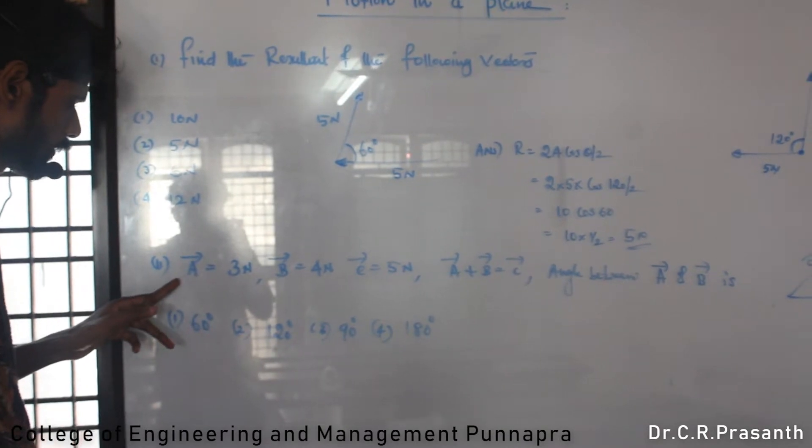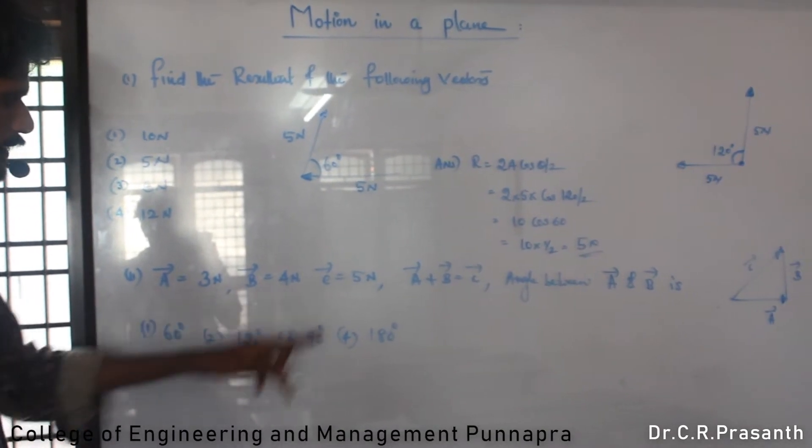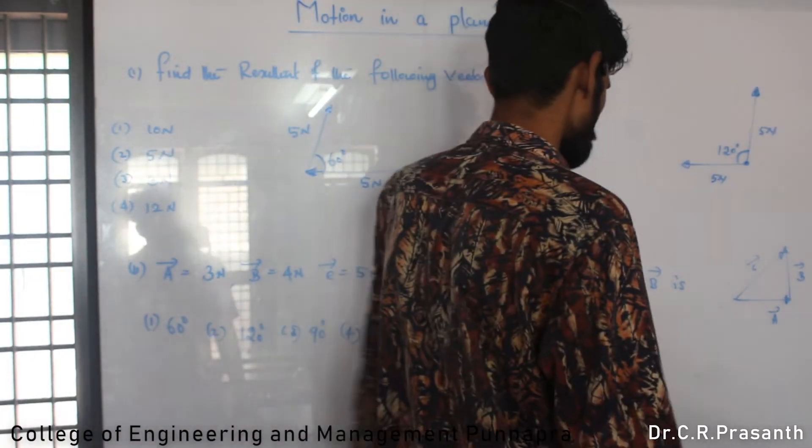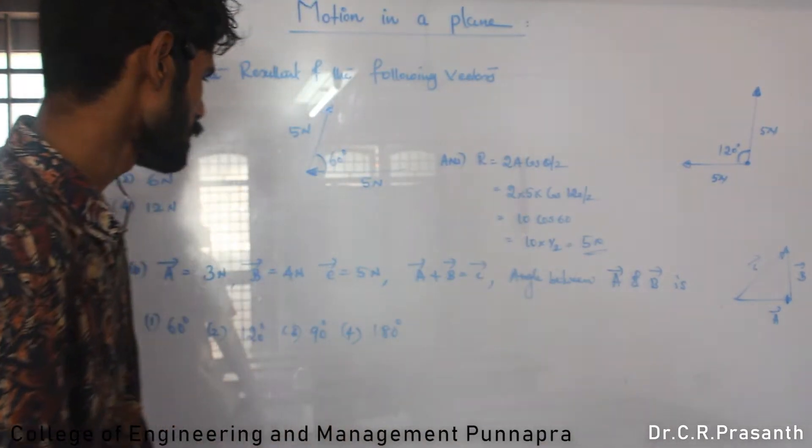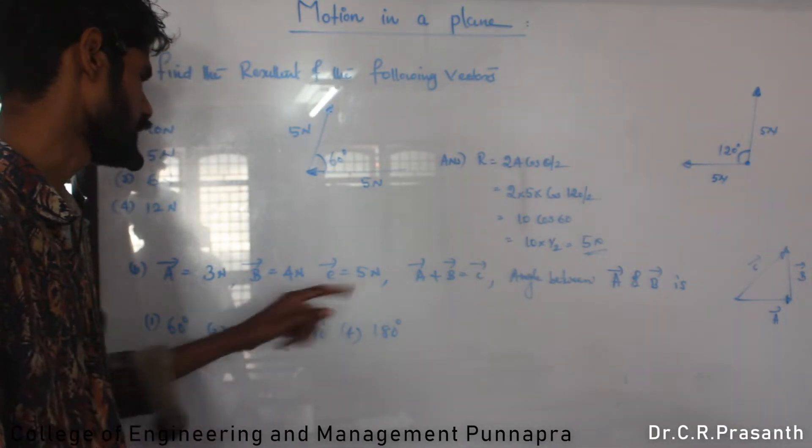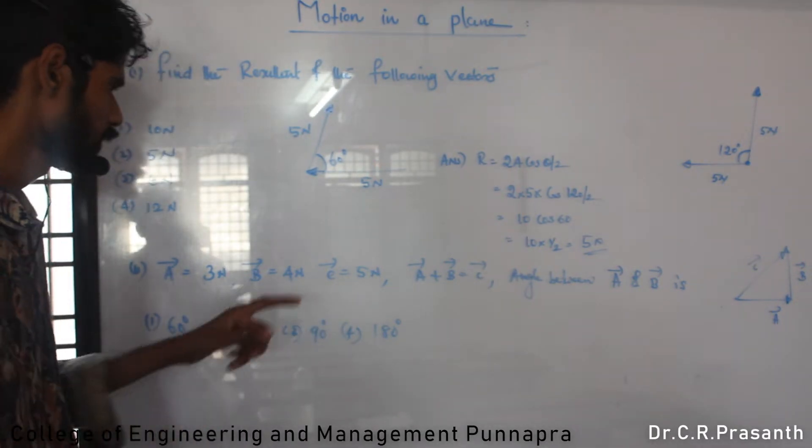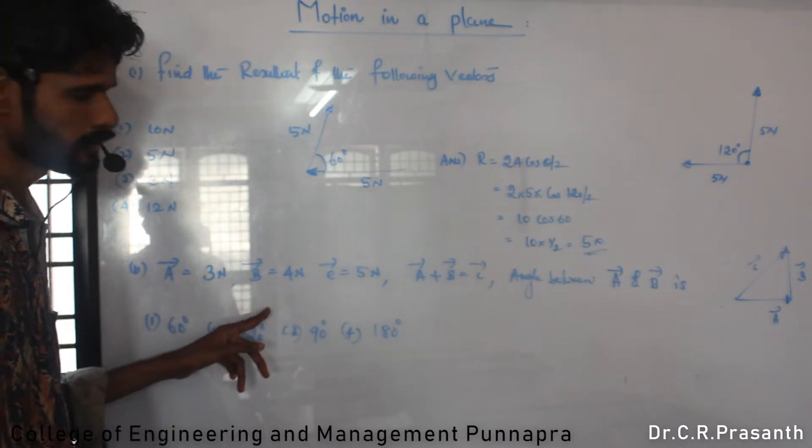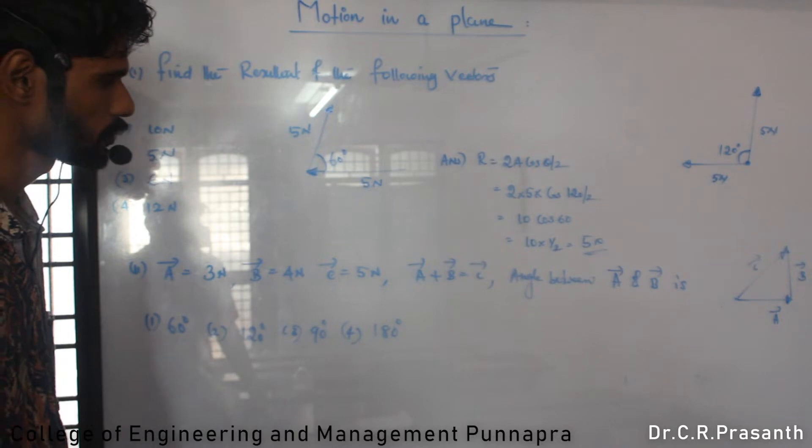Next question. Vector A equals 3, vector B equals 4, vector C equals 5. A plus B equals C. C is 5. So C squared equals A squared plus B squared. 3 squared plus 4 squared equals 5 squared. That property is satisfied.